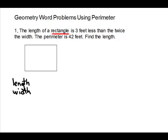The other quantity we're going to use to solve the problem is perimeter. The problem says: the length of a rectangle is 3 feet less than twice the width, and the perimeter is 42 feet. Find the length. We want to know which dimension they say nothing about. They say nothing about the width, so that's going to be our variable.